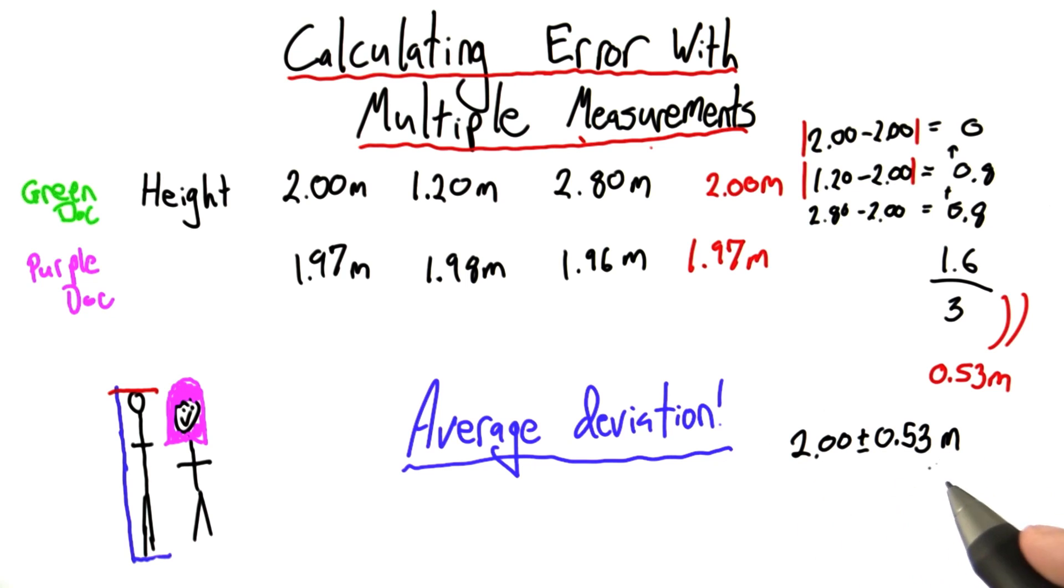Now, knowing my height to within half a meter is not so helpful, so let's see what the purple-haired doctor said. Can you tell me how the purple-haired doctor would state my height, including the average and the average deviation? Enter your answer here.